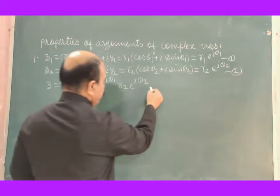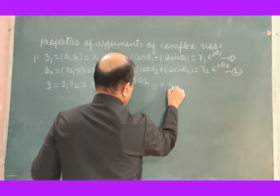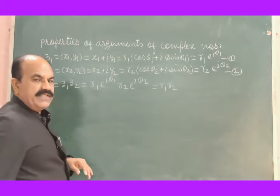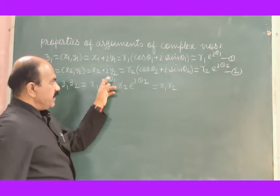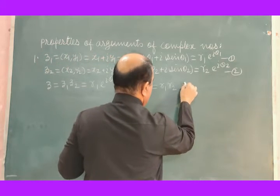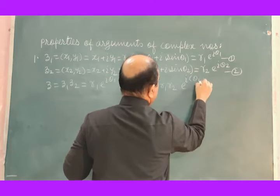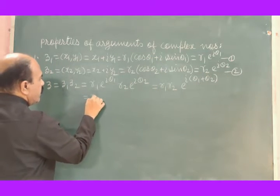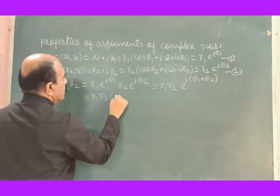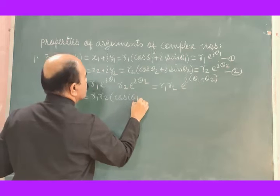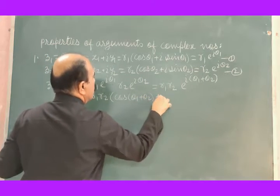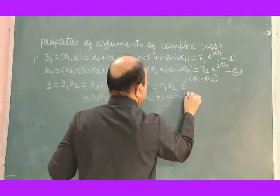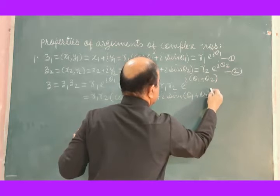The result will come out the same. This equals R1 R2 — since the base is the same, add the exponents. Taking i common, you get i times θ1 plus θ2. That is nothing but R1 R2 into bracket cos(θ1 plus θ2) plus i sine(θ1 plus θ2).